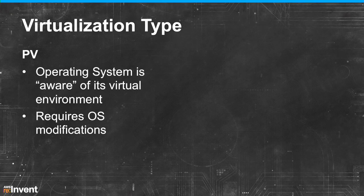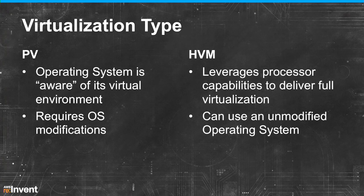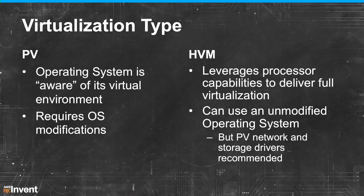With paravirtualization, the operating system itself has drivers introduced which make it essentially aware that it is virtualized. Almost all stock Linux kernels today come with these paravirtualization drivers already in the kernel. With hardware virtualization, you're leveraging the virtualization support built into the CPU, so you can use unmodified operating systems. However, in an HVM Linux AMI, you can still make use of the paravirtualization drivers built into the Linux kernel, and you get better performance out of network and storage.